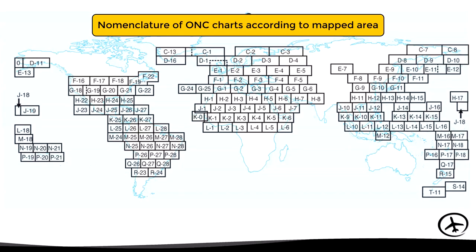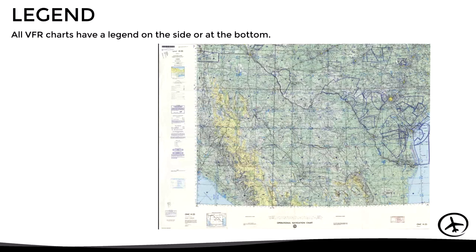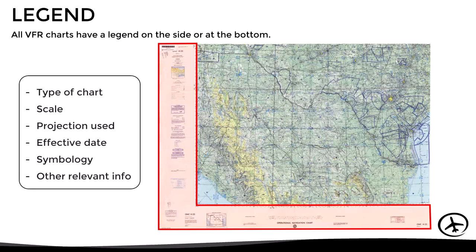Now, although the design and symbology of these VFR charts may vary from country to country, they all have certain elements in common, which we will see next. The first thing we will find in any VFR chart is a legend on the side or at the bottom, which includes information regarding the type of chart, the scale, the type of projection used, the effective date, the symbology used, and any other relevant information such as special flight procedures, communication frequencies, etc.